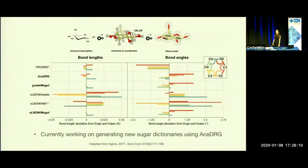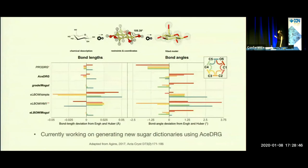We also use information on restraints and coordinates stored in dictionaries. The problem is that the dictionaries currently in the CCP4 monomer library regarding sugars are often incorrect, and we're working on regenerating them. Here you can see a comparison of different dictionary generation programs. GRADE, Mogul, and eLBOW are considered the gold standard, but we've chosen to use ACE-drg because it gives comparable results and is freely available with CCP4. We are currently working on generating new dictionaries for all sugars with ACE-drg.